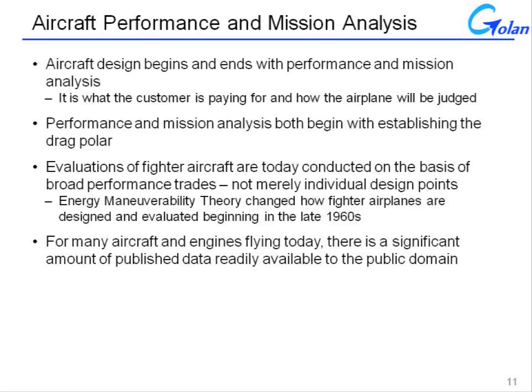For many aircraft and engines flying today, there is a significant amount of published data readily available. This is true for aircraft developed throughout the 1970s and 1980s. As you get to more recent aircraft like the F-22 and F-35, you'll see a lot less in the public domain — fewer basic statistics being quoted. The reason is to prevent an adversary from doing precisely what I've outlined here: using public domain data to extrapolate the performance, combat radius, payload capabilities, and high-G capabilities of modern aircraft. They've learned a little bit over the decades — while it's already been published for aircraft like the F-15, F-16, and F-18, going forward there's a much tighter rein on what is allowed to be published.